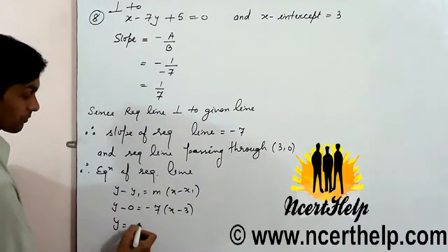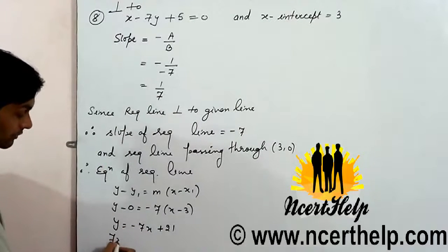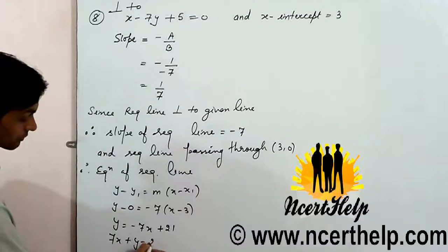y equals minus 7x plus 21, or 7x plus y equals 21.